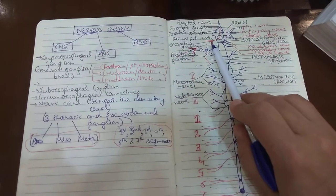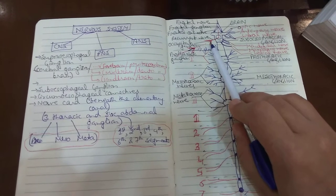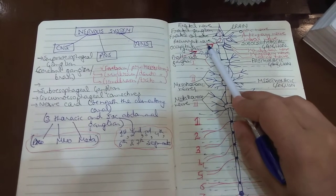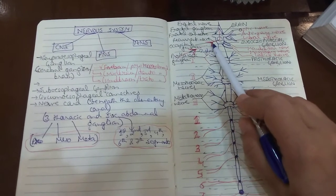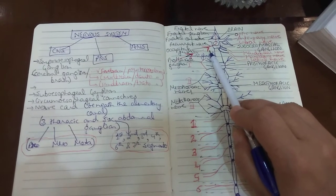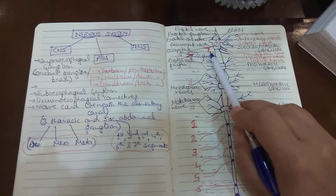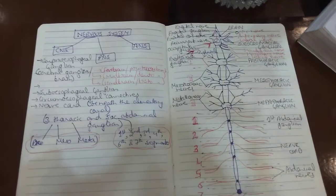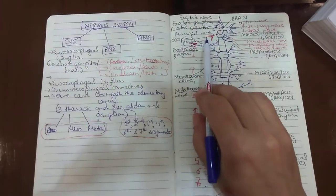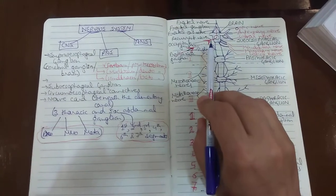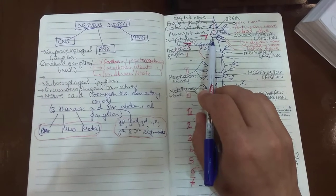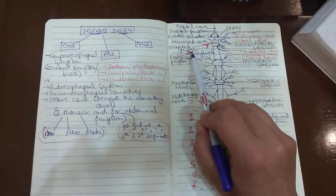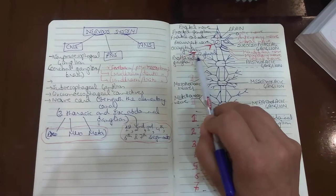The occipital ganglion lies on the esophagus behind the brain. From it arise three nerves — two lateral and one median. The two lateral nerves meet the corpora cardiaca, the endocrine gland, and the median nerve runs backward over the esophagus and joins the ingluvial ganglion.